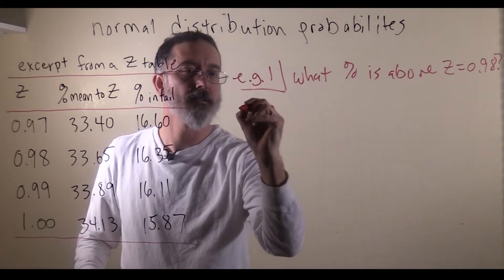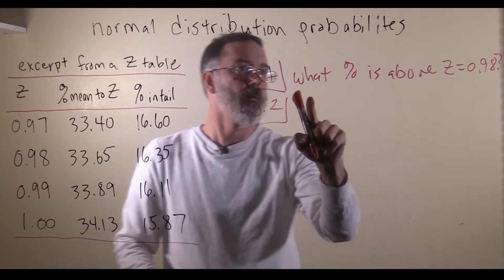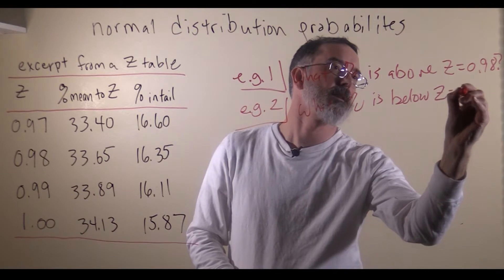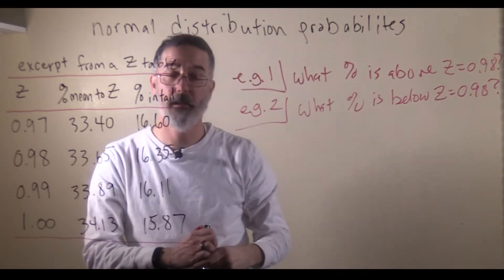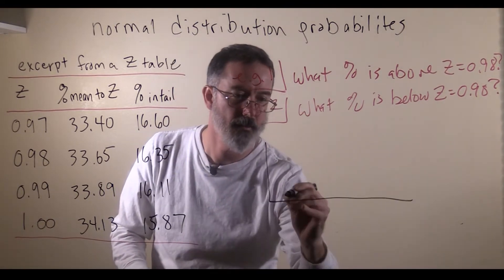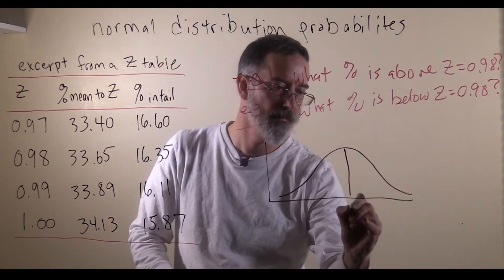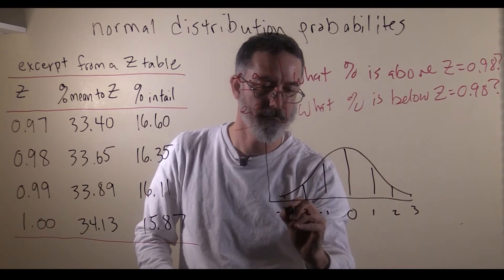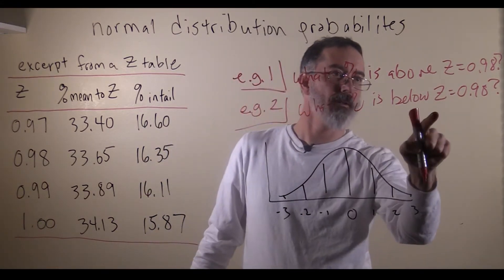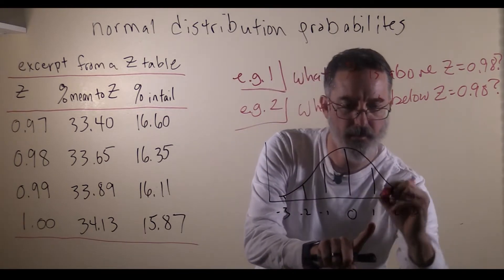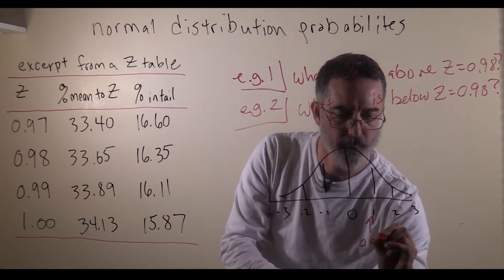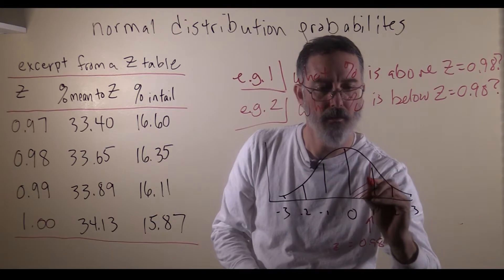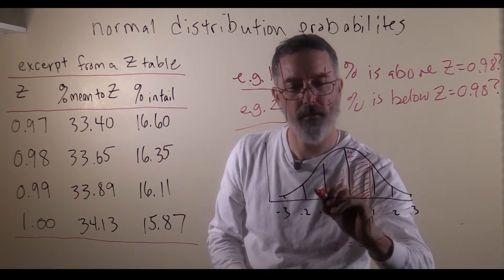Now let's look at a very closely related question: what percent is below z equals 0.98? Again, I encourage you to draw the normal distribution as you work through any of these problems. We want the percent below 0.98, so 0.98 is the z-score we are interested in, and the percent below will include that point and everything to the left of it.